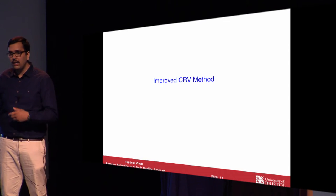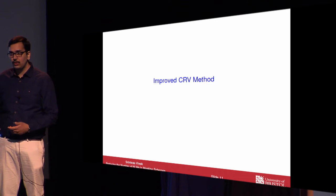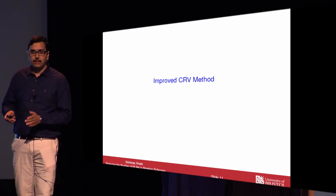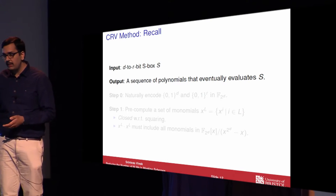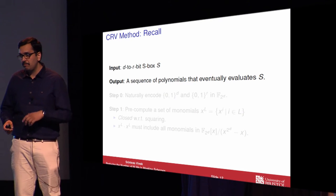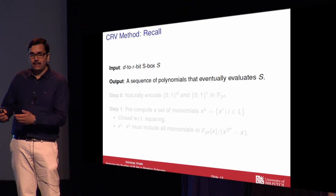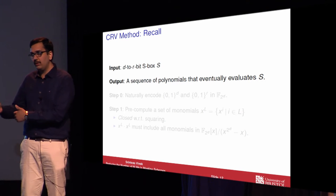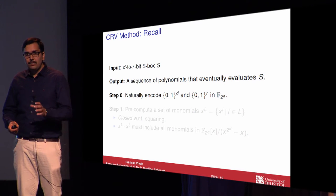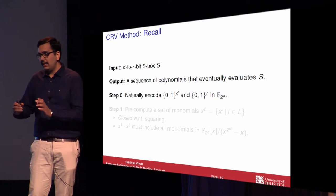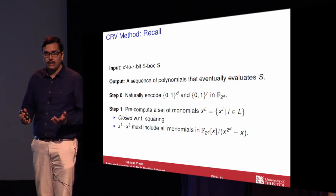The main contribution in our work is to improve the CRV method to evaluate polynomials corresponding to S-boxes with respect to the non-linear multiplication complexity cost model. To quickly recall the CRV method: we are given a D-to-R bit S-box as input, and we need to come up with a strategy to evaluate the polynomial corresponding to the given S-box. The first step is to naturally encode the D and R-bit strings as elements in F2 power D, and then pre-compute a set of monomials.